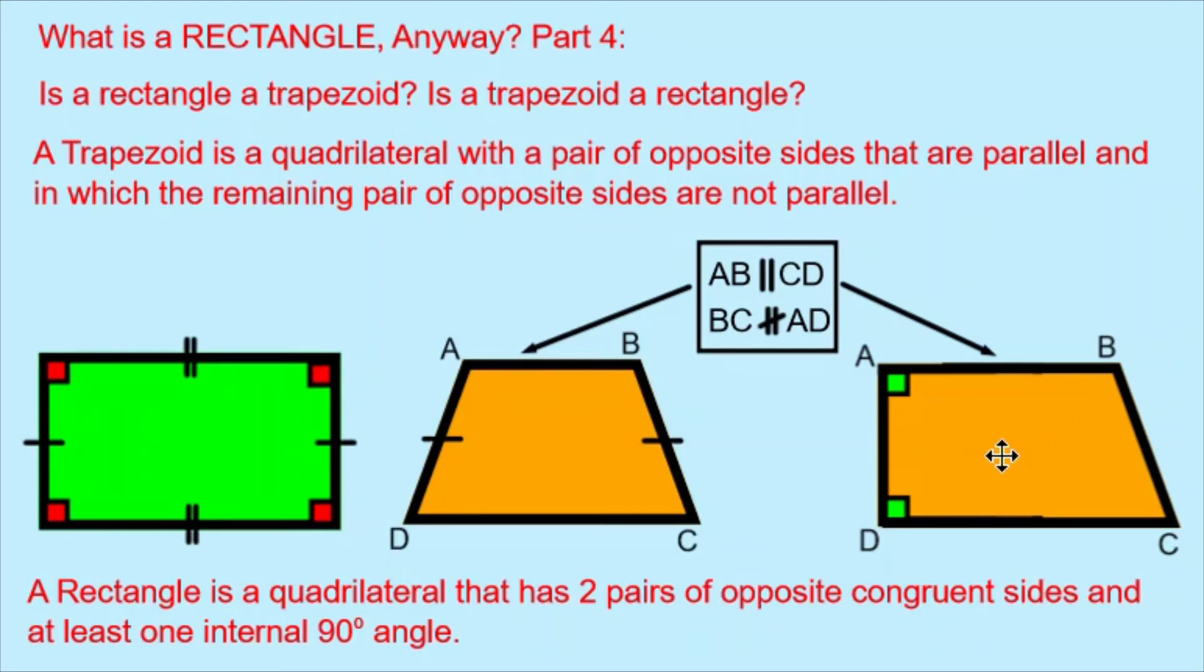My right trapezoid also cannot be a rectangle because although it does have at least one internal 90 degree angle, it does not have two pairs of opposite congruent sides. In fact, it cannot have two pairs of opposite congruent sides.